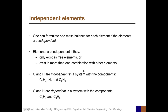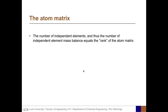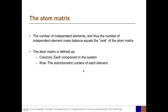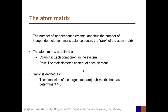The ratio between C and H is 1 to 2 in all of the components present in that system. This can be quantified using the atom matrix, which states that the number of independent elements — and thus the number of independent element mass balances — equals the rank of the atom matrix. The atom matrix is defined with each component in the system as columns, and each row represents the stoichiometric content of each element in the different components. The rank is defined as the dimension of the largest square sub-matrix that has a determinant greater than zero.